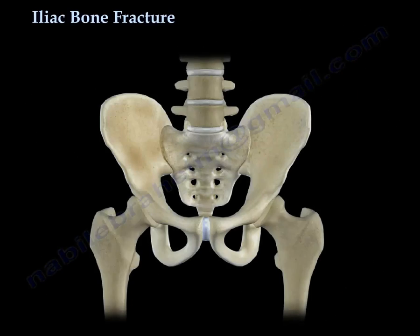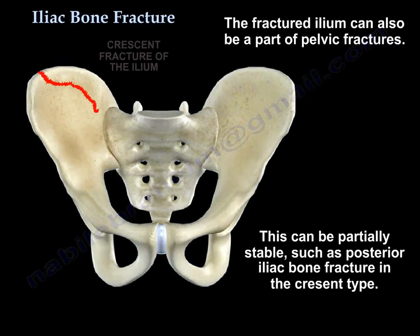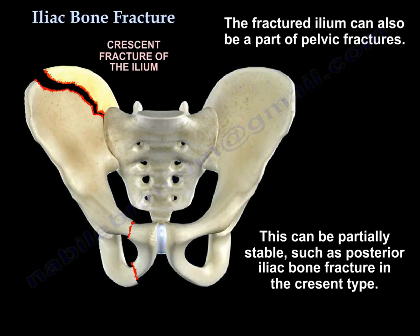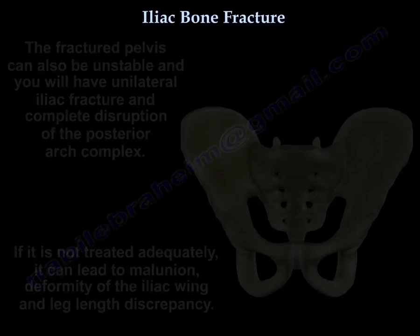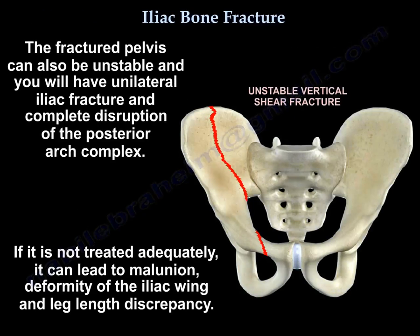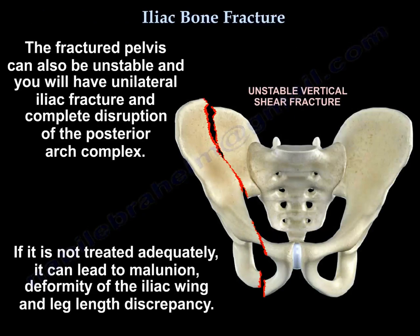The fracture ilium can also be part of the pelvic fracture, and that can be partially stable, like a posterior iliac bone fracture in the crescent type. Or the fracture pelvis can be unstable, with unilateral iliac fracture and complete disruption of the posterior arch complex.